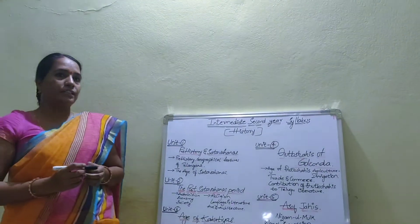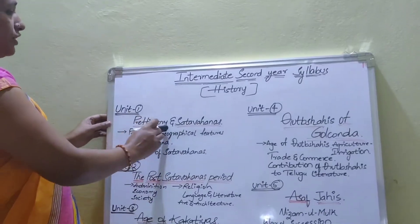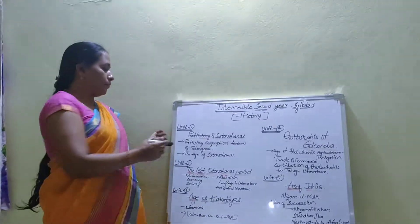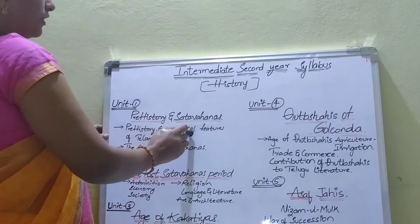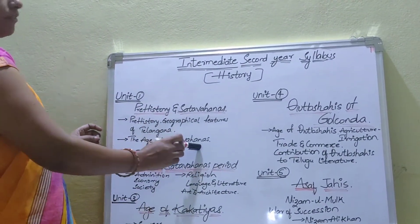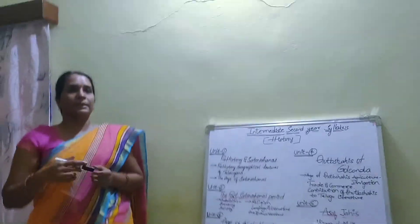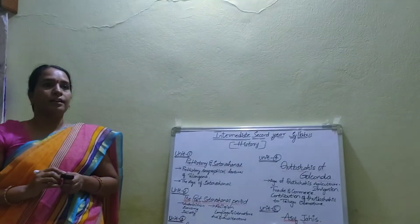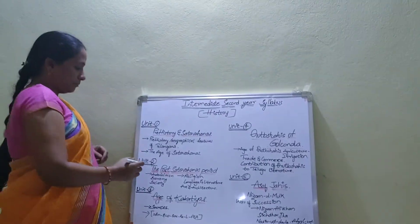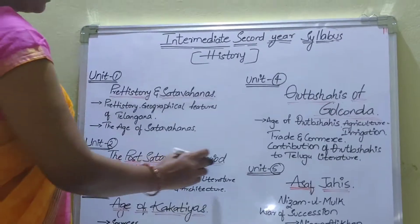The first unit is Prehistory and Shatavahanas. We are going to study about the Shatavahanas period, Prehistory, Geographical Features of Telangana, the Age of Shatavahanas, the Capital of Shatavahanas, and the Economic and Religious Condition of Telangana in the Shatavahana period. The second chapter is the Post-Shatavahana period.